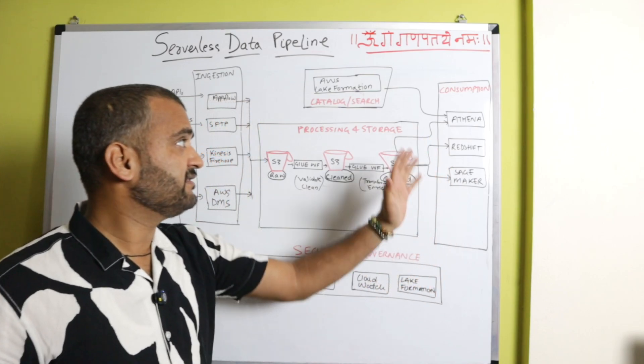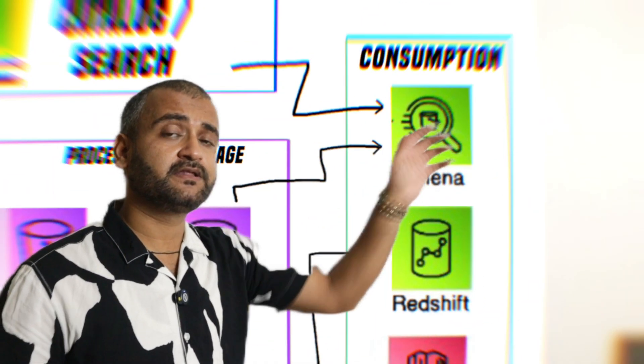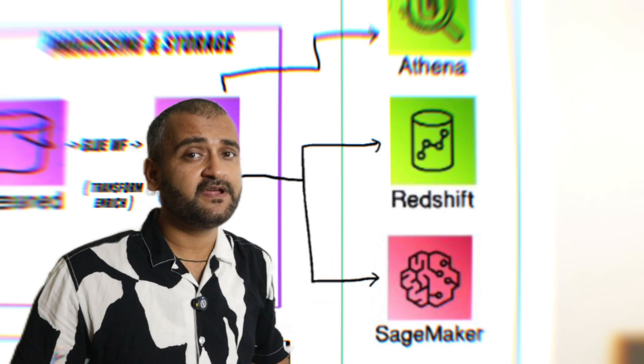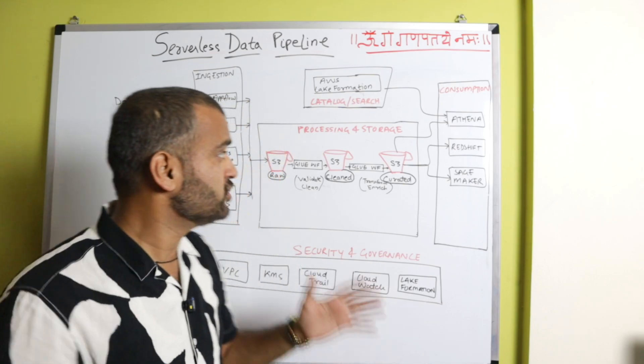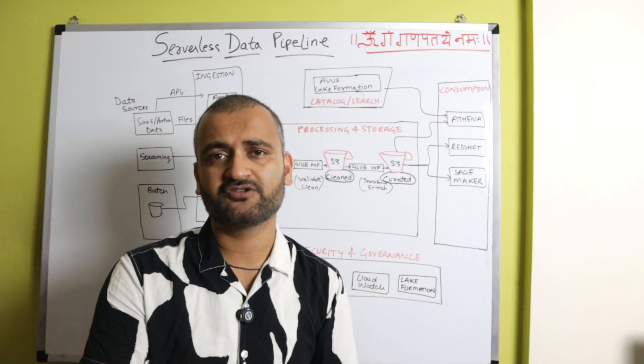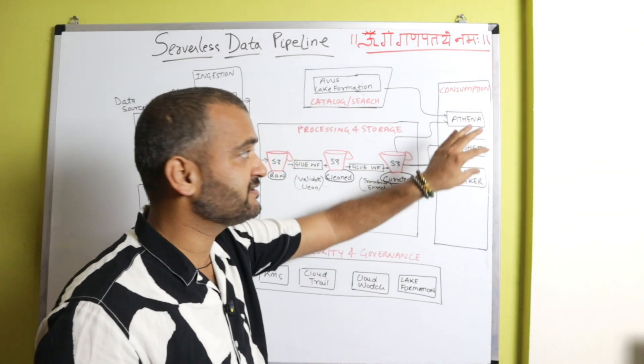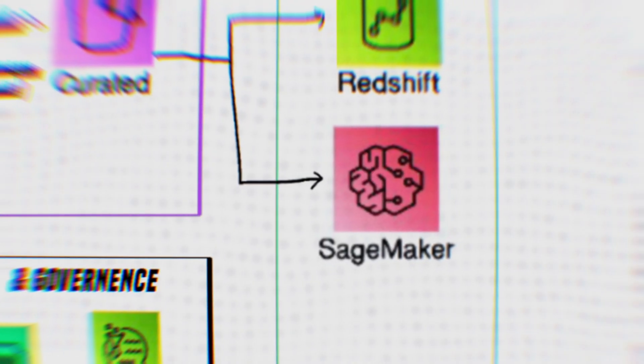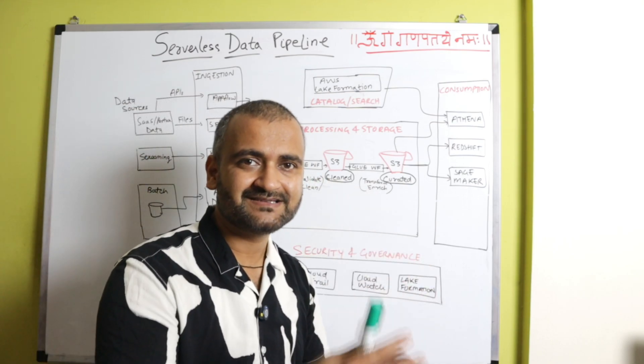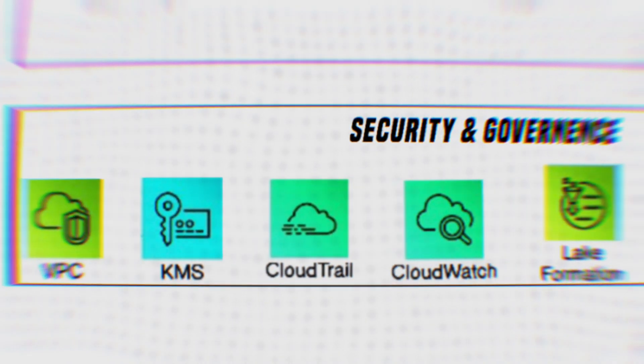So coming now to the consumption layer. In the consumption layer, we have Athena, which is interactive query service for S3. So any S3 bucket, you could directly connect with Athena and start analyzing the data, start querying the data. A very good serverless service. Then we have Redshift, which is a very famous offering from AWS. It is for your data warehousing workloads. So once you have everything in this data lake environment, you might have specific requirements, which could be dealt by building your own data marts or your own data warehouses. So after building this data lake, you can have your data warehouses or your data marts stored on Redshift. And then you have SageMaker, which is the platform offered by AWS for deploying all kinds of different machine learning and AI models. So if you want to go into data science domain, then SageMaker would be your next step.